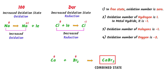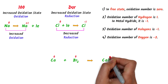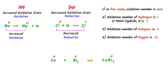We know that in the combined state, the oxidation state of halogens like bromine is negative one. There are two atoms of bromine, so negative one plus negative one equals negative two. Thus, the total oxidation state of bromine is negative two. Therefore, the oxidation state of calcium must be positive two, because the overall charge on calcium bromide is zero.